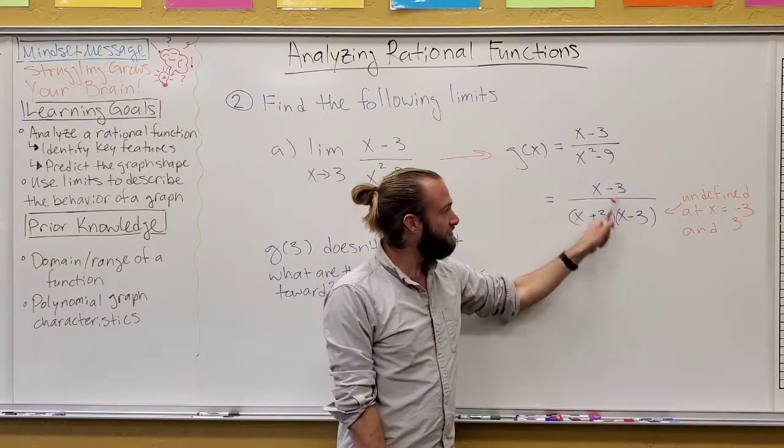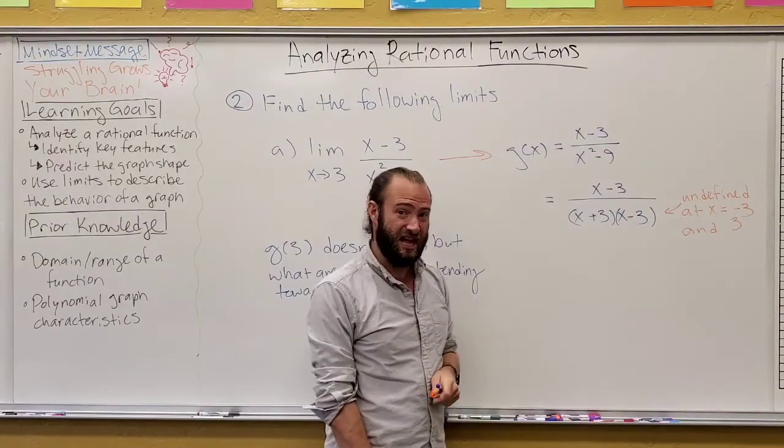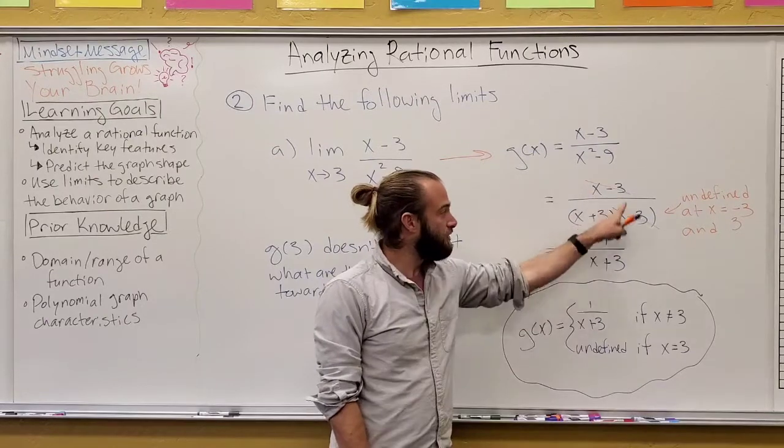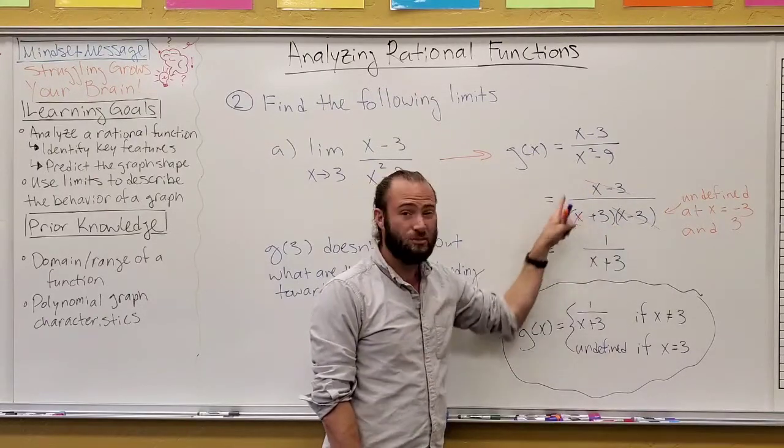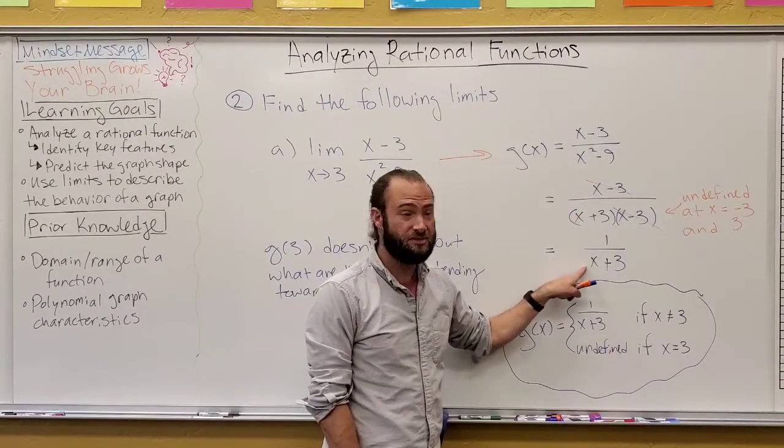Well, it has to do with the fact that these factors there cancel out. So, we cancel them out, and we get that this algebraically is equal to one over x plus three.